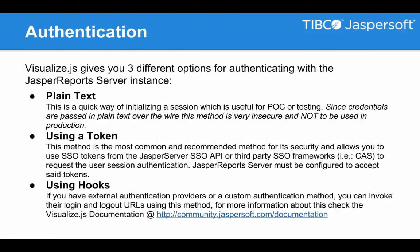Now let's move into authentication. You have three different options for authentication to the back-end Jasper Report Server through VisualizeJS. The first one is very useful when you're doing POCs or testing the library — working with FIDLs — because it's a plain text authentication. Since all the credentials are actually stored in your script and sent over the wire in plain text, this method is very insecure and should never be used in production.